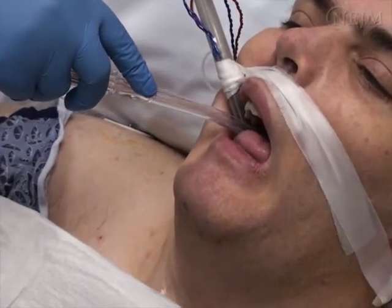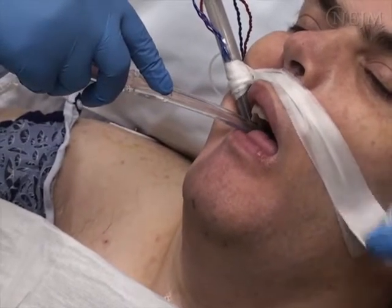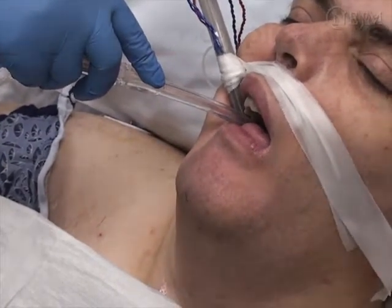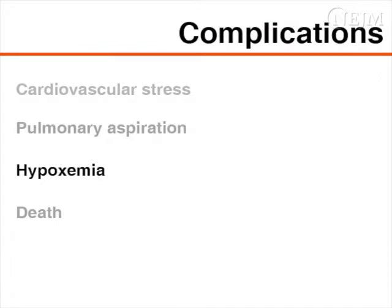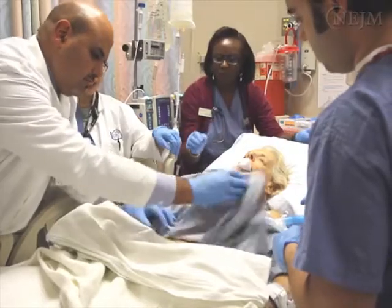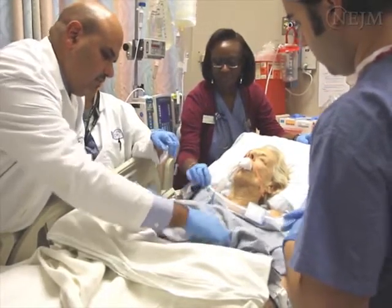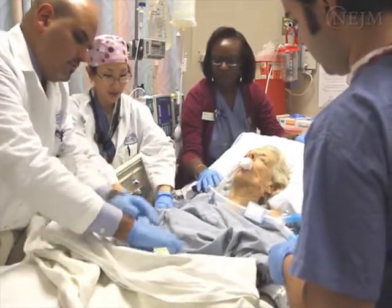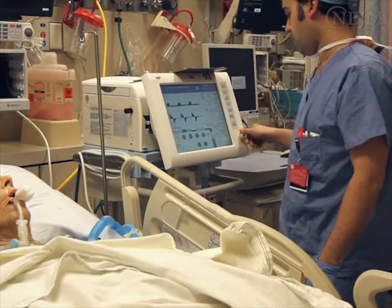Although many problems related to endotracheal extubation are minor, serious complications can arise. These complications include cardiovascular stress, pulmonary aspiration, hypoxemia, and even death. To minimize the possibility of complications related to the removal of an endotracheal tube, a plan for airway management is required.